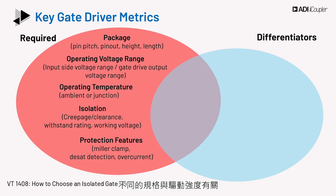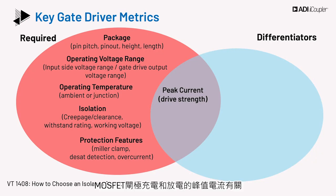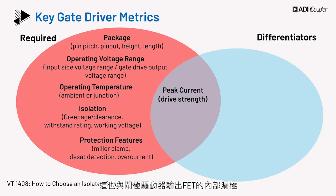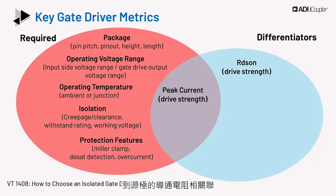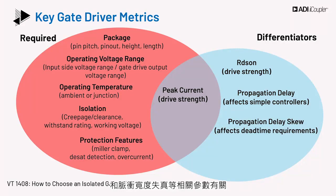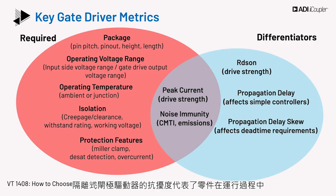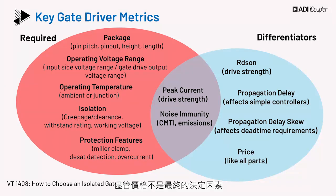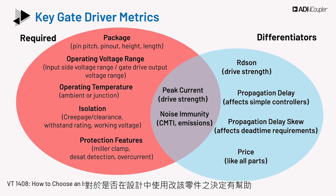The differentiating specs are linked to drive strength, which relates to the value of the peak current that the part may deliver to charge and discharge the MOSFET gate. This is also tied to the internal drain-source resistance, RDS on, of the gate driver output FETs. The timing performance specs are related to the propagation delay and associated parameters like skew and pulse width distortion, which affect system design. Noise immunity of the isolated gate driver is the signal strength integrity of the part under various transients and other radiated emissions while in operation. Last of all is the price, which is an important consideration, though it is not a final decider.